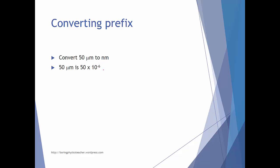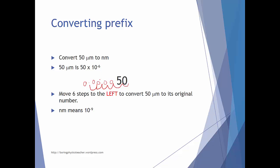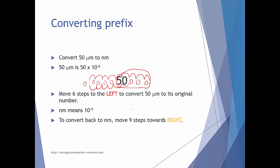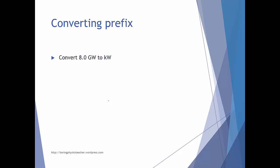Conversely, converting 50 micrometers back to nanometers uses exactly the same steps. Micrometer is 10 to the power negative 6, so move the decimal six places to the left — one, two, three, four, five, six — giving 0.000005. Then since nanometer is 10 to the power negative 9, move nine places to the right — one through nine — and you are left with 50,000. So 50 micrometers equals 50,000 nanometers.